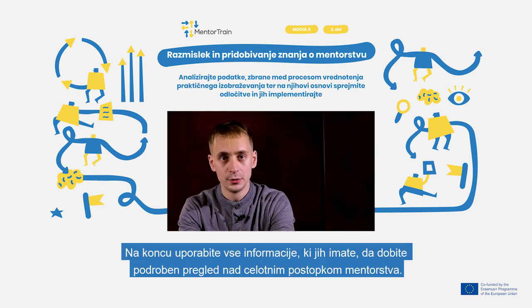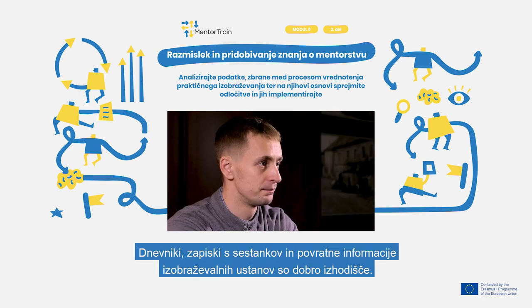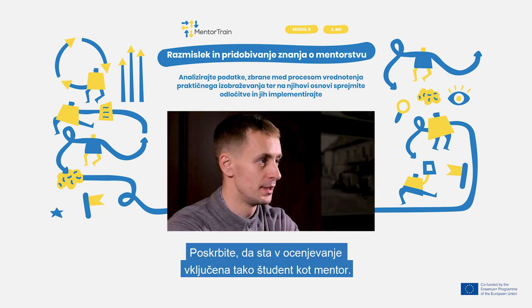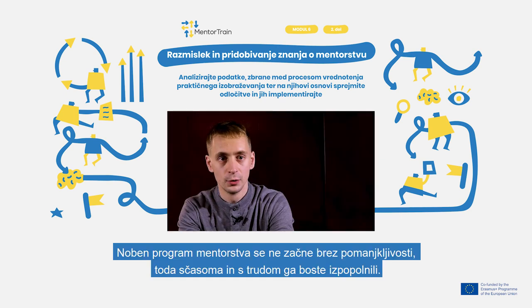In conclusion, use all the information you have to get a detailed overview of the whole mentoring process. Diaries, notes from any meetings you had, and feedback from the educational institution are good starting points to keep in mind. Make sure you involve both the apprentice and mentor in the evaluation. No mentoring program starts out perfect, but with time and effort you'll get there.